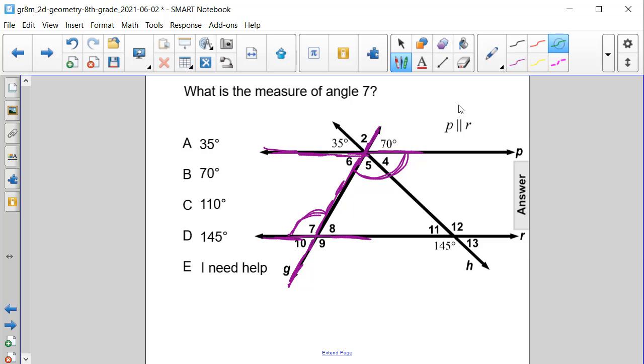If we look, we have 70 degrees and angles 4 and 5 all add up to become a straight angle, or 180 degrees.